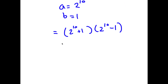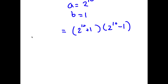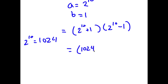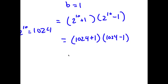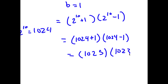Now, 2 to the power of 10 equals 1,024. So I have 1,024 plus 1 times 1,024 minus 1. And 1,024 plus 1 is simply 1,025, times 1,024 minus 1, which is 1,023.